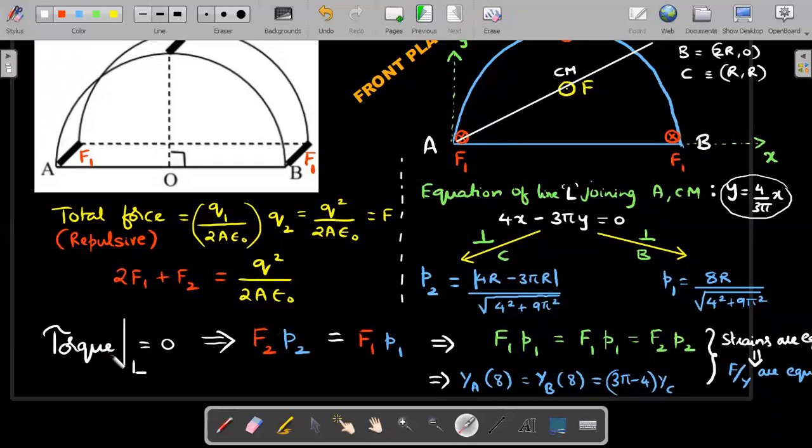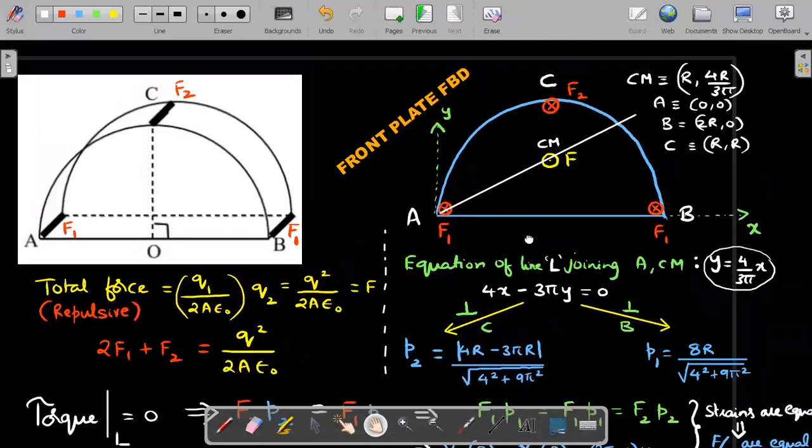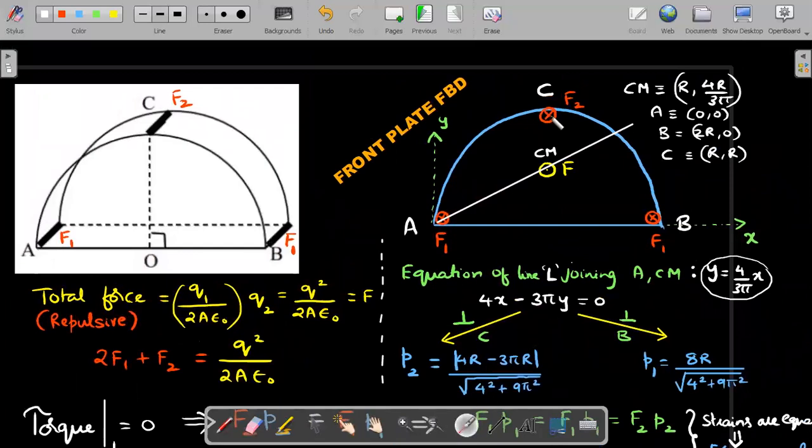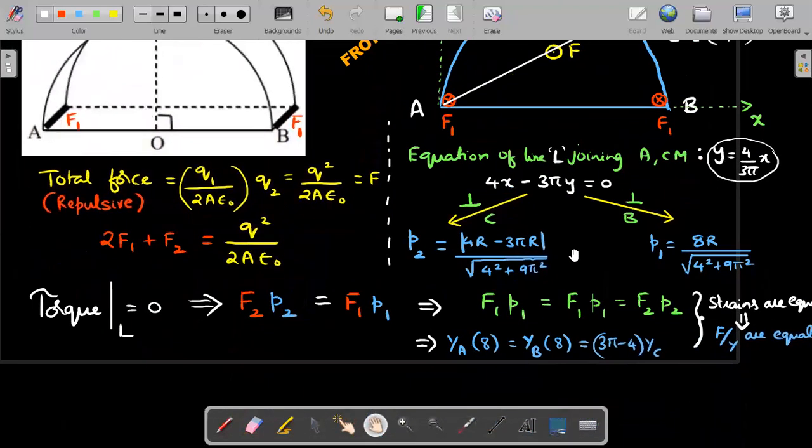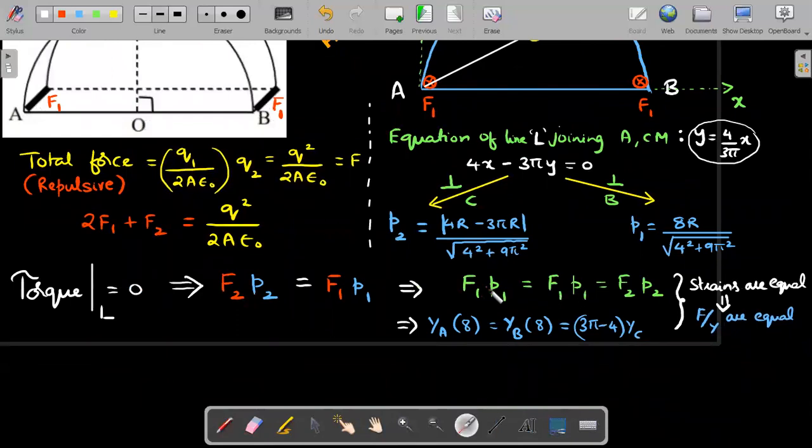Now for torque about this line, F2 p2 should equal F1 p1. And because the fourth option had all the three forces, I will write F1 p1 equals F1 p1. I have written it twice, because these two should be the same forces. I said I will prove that those two are same. I could have done it using another trivial line joining C and CM, and consider torque about that line also. Since these two are equidistant from this line, I can argue that these two forces are equal by torque. So I have written F1 p1 twice to represent one part as A, one part as B, and the last one as C.